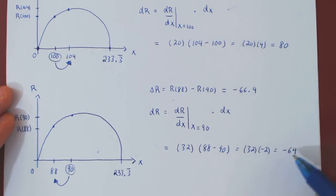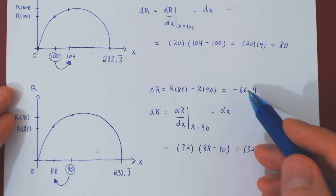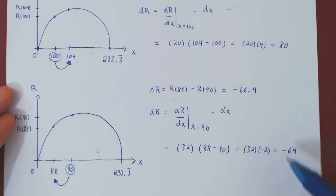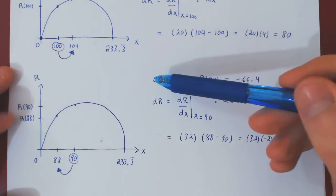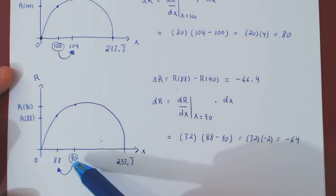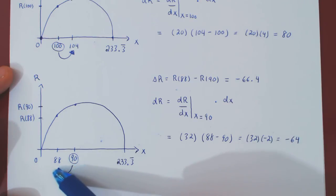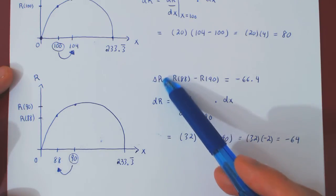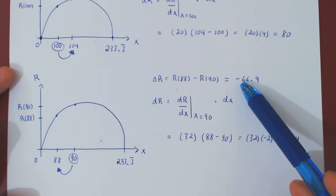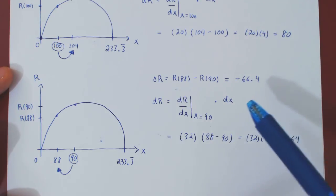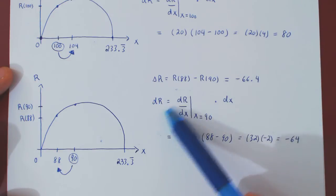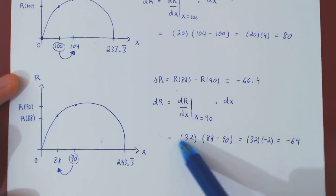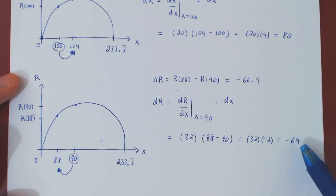This is not exactly negative 66.4, but again fairly close. To summarize: as the number of units sold decreased from 90 to 88, the revenue decreases by $66.40 exactly, and the differential approximation gives an approximate change in revenue of negative $64.